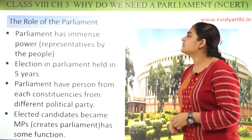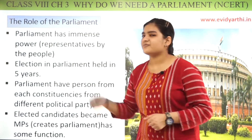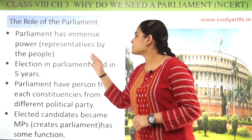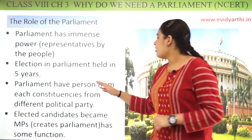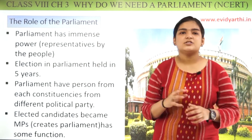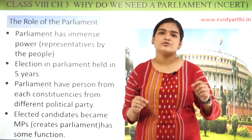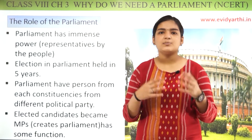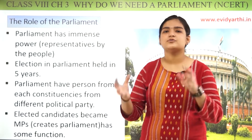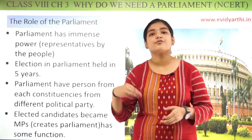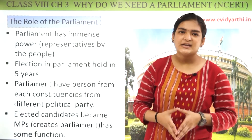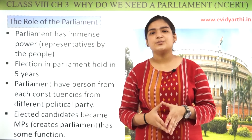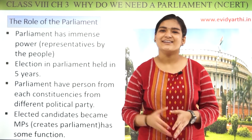Toh isi ke saath, the role of parliament humne samajh liya hai. Parliament ko bahut zyada power hoti hai kyunki woh directly logo se elect hote hain. Election 5 saal mein ek baar hota hai. Aur parliament mein jitni bhi constituencies hoti hain — 543 — ek-ek jagah se ek-ek representative aata hai, political party banaata hai, aur agar us ki party ko majority mil jaaye, toh woh government form karta hai. Yeh humne pura topic kar liya hai. Baaki topics hum next video mein continue karenge. Till then, take care. Bye bye.